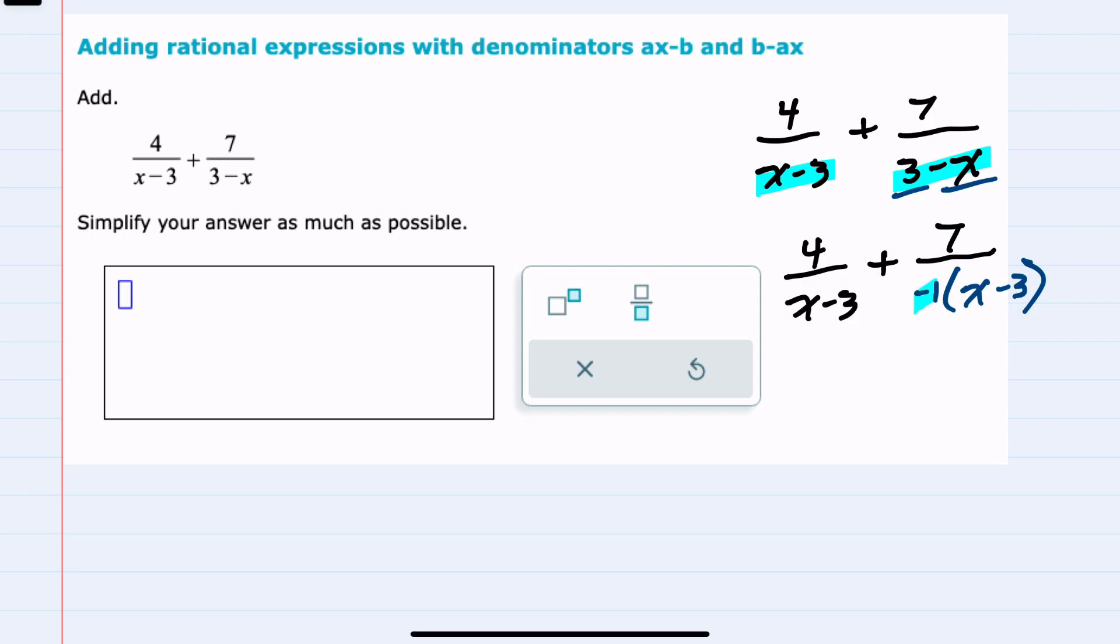And if we go ahead and do the 7 divided by negative 1, that would become a negative 7 in the numerator. My denominator would now be just the x minus 3, which is the same as our left-hand side, so we now have a common denominator.